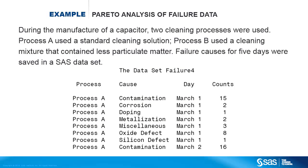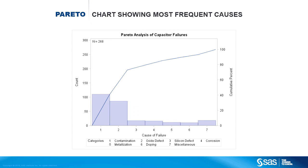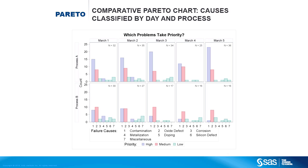Here is a partial listing of a data set that contains the causes of failures over five days in two industrial cleaning processes. This code produces a simple Pareto chart of failure causes. Here is the simple Pareto chart of all the failure data. The axis scale on the left applies to the bars that show the counts for different causes, and the axis scale on the right applies to the cumulative percent curve. Here you can see that contamination and oxide defects together account for about 80% of the failures. This comparative Pareto chart shows the causes of failure for process A and process B independently and shows separate results for each of the five days. You can see that contamination is the biggest problem for process A, but oxide defects are equally, if not more, of a problem in process B.